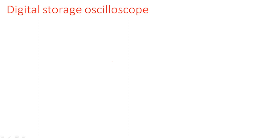Now we are going to see the digital storage oscilloscope, which needs memory to store data in terms of ones and zeros, because the data is digital. But suppose we have an analog sinusoidal signal — how are we going to store it? We need to convert that analog data into digital data.